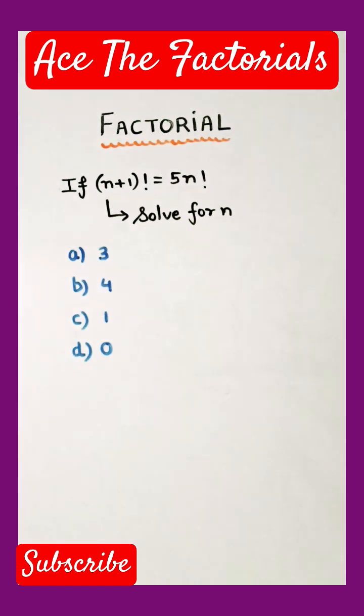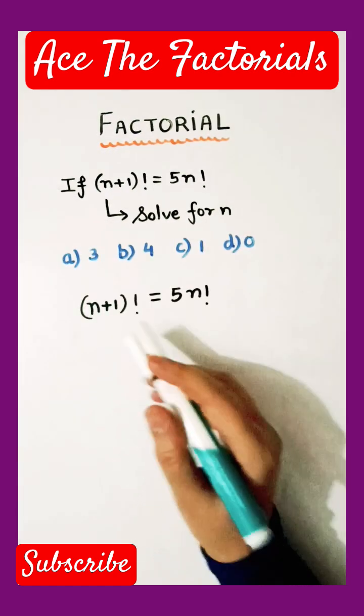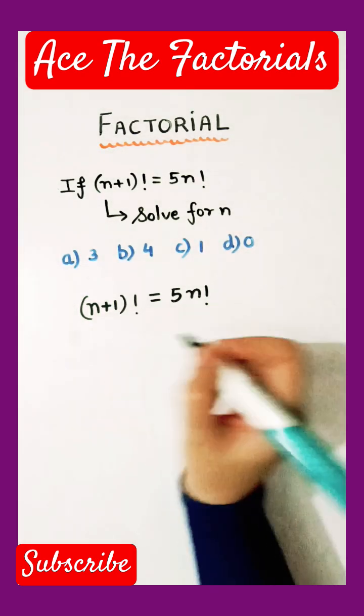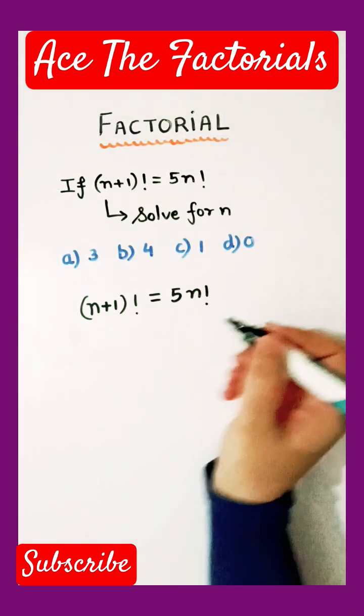So how are we going to solve it? Let us begin with the given equation: n plus 1 factorial on the left hand side and 5n factorial on the right hand side.